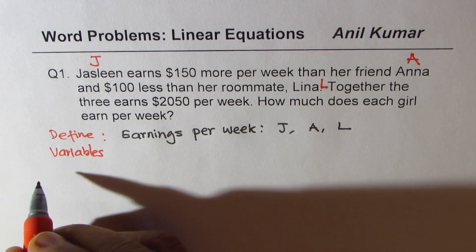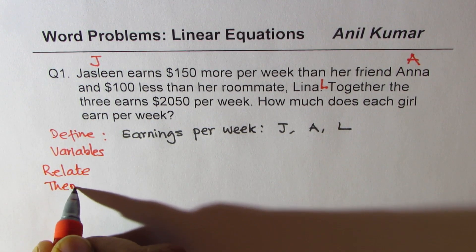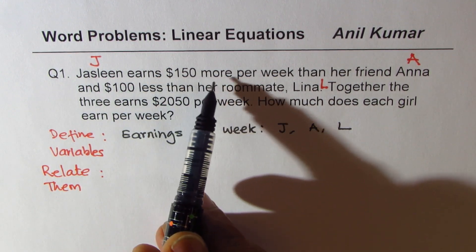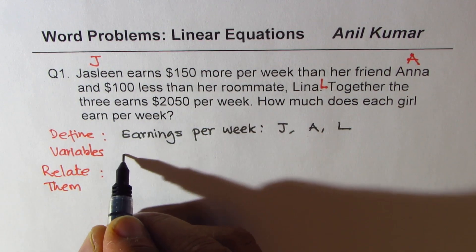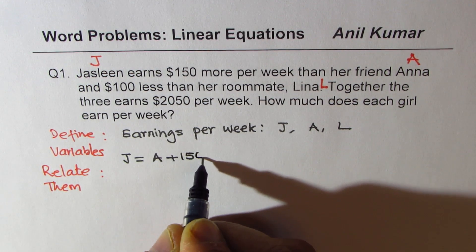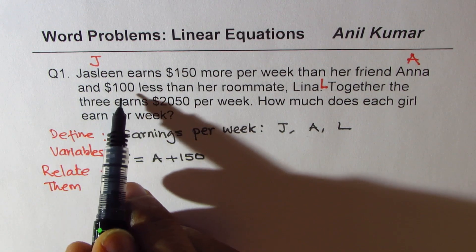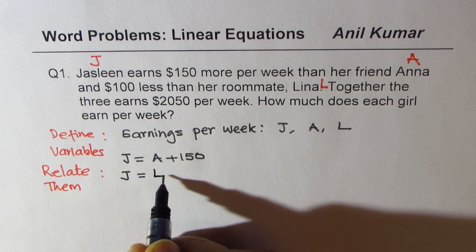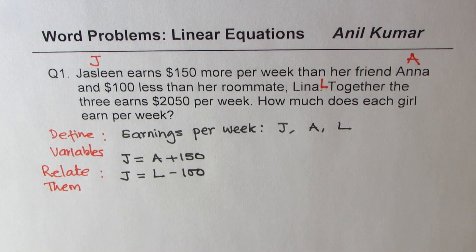Now, let's find the relation, so relate them. Jasleen earns $150 more per week than her friend Anna, so J equals A plus $150. And $100 less than her roommate Lina, so J equals L minus $100. So that is how we have related them all.